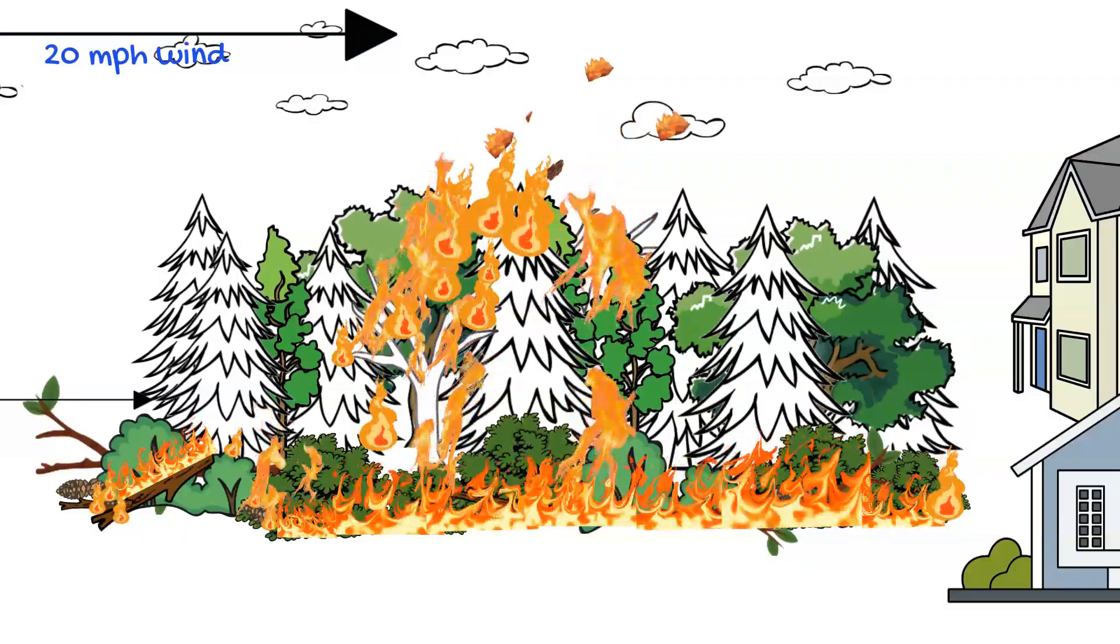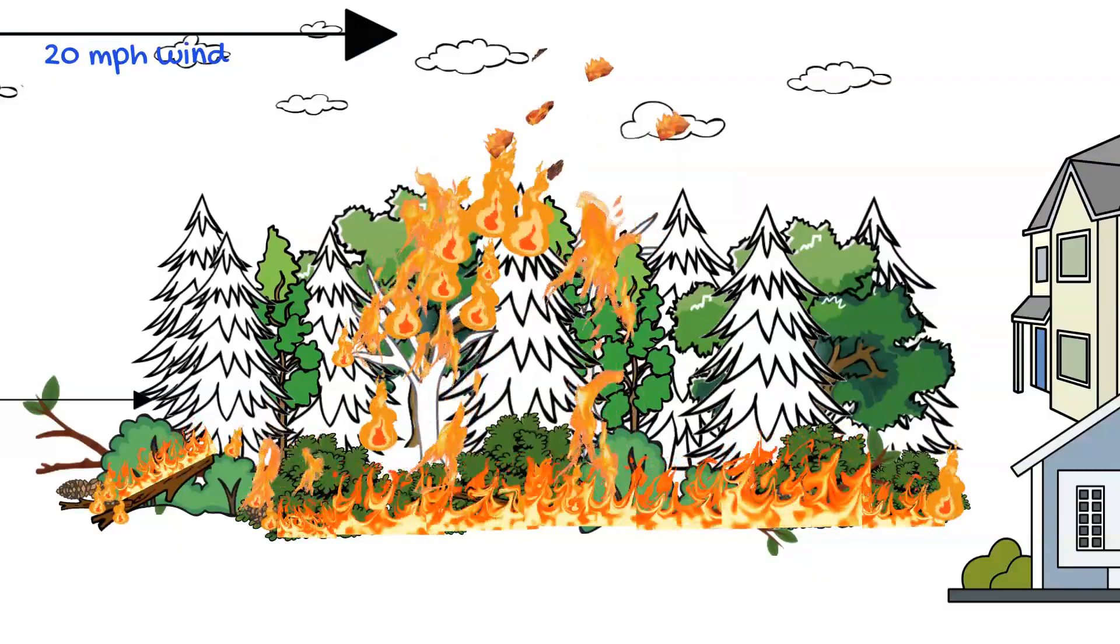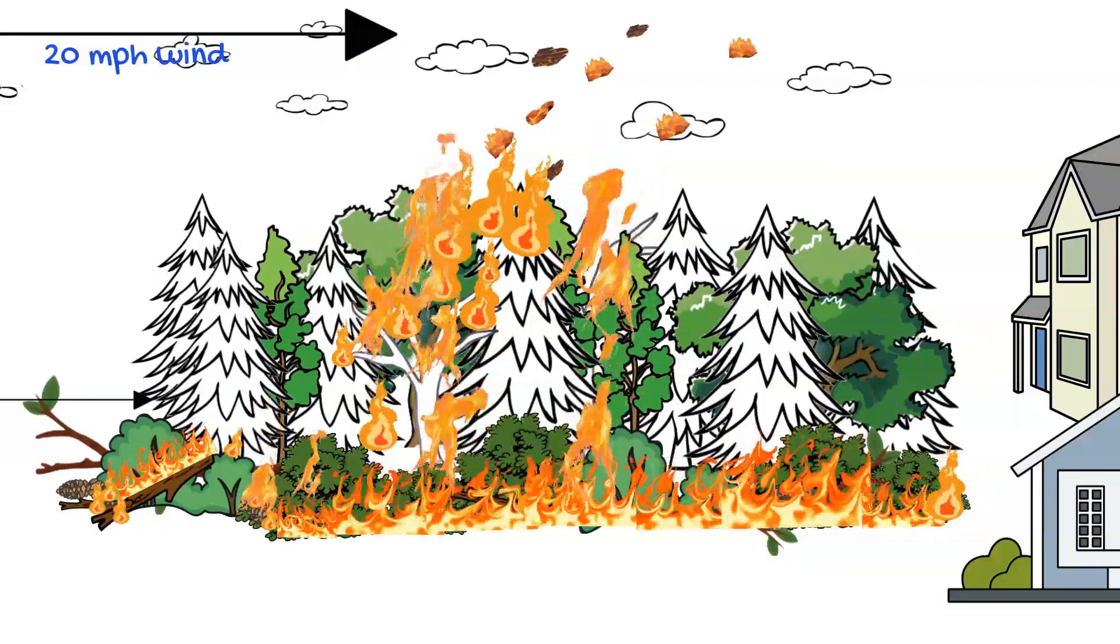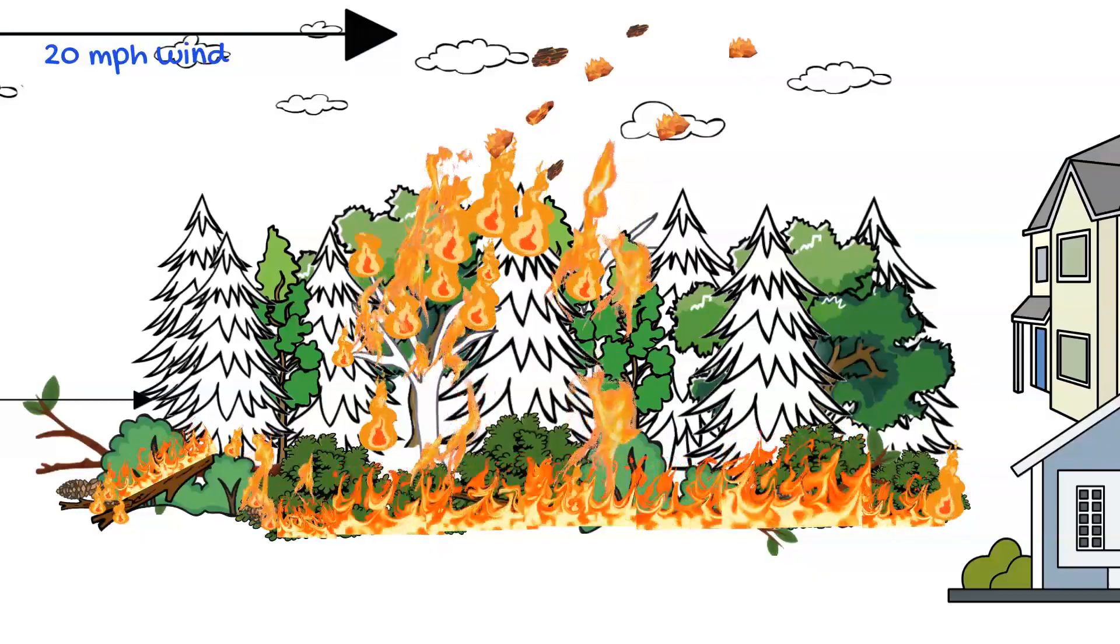When that individual torching occurs, you're going to see embers get launched into the 20-foot wind. And that's what's spreading those embers downwind.